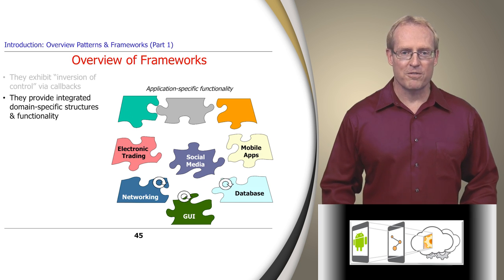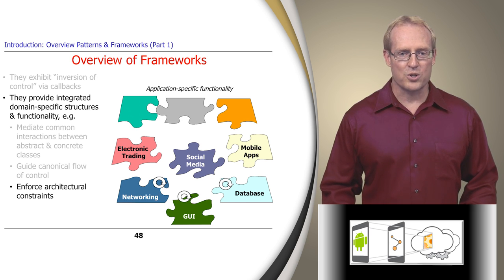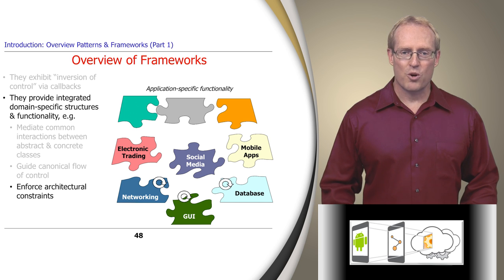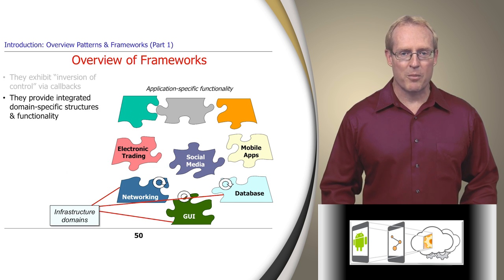The second defining characteristic of frameworks is their support for domain-specific structures and functionality, which allows the framework to perform many common interactions, guide the canonical flow of control, and enforce key architectural constraints, so developers needn't rediscover, re-implement, and re-debug them for each new application. Some domains supported by frameworks are application domains, such as social media, mobile applications, or electronic trading. Other domains supported by frameworks are infrastructure domains, such as graphical user interfaces, communication middleware, and persistent database storage.